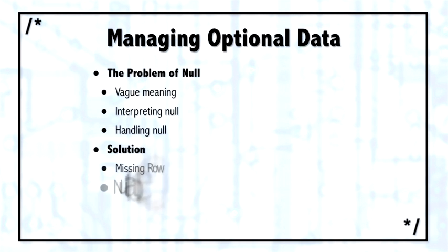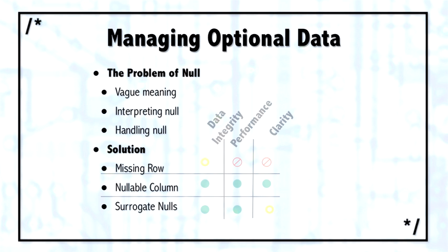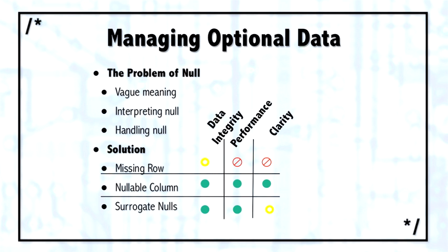To summarize managing optional data: the missing row approach gives you questionable data integrity, horrible performance, and is very difficult to understand. The nullable column can give you good data integrity and good performance, and it's easy to understand — but you have to handle the null in your code. Then the surrogate null can also give you good integrity and good performance, but because it's often inconsistent, it will give you poor clarity.